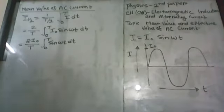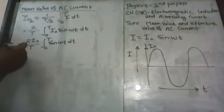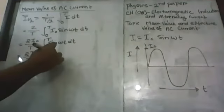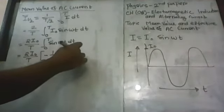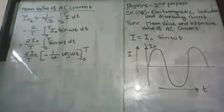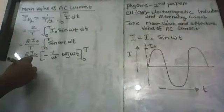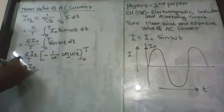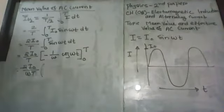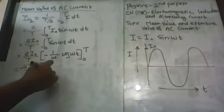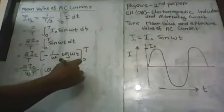Using this formula, it becomes 2I₀ divided by T, multiplied by −(1/ω)cos(ωt), evaluated from 0 to T/2. The minus and 1/ω come out from the limit of integration, giving us −2I₀ divided by (ω × T). We apply the upper limit first, then the lower limit: cos(ω × T/2) minus cos(0).